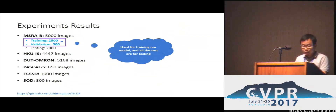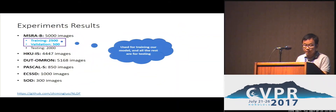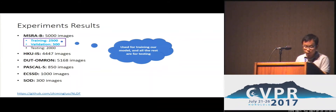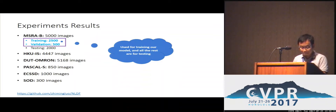We evaluate our model on six different datasets. The 3,000 images from the MSRA-B dataset were used for training, and all the rest were used for testing. The code can be downloaded at the link below.